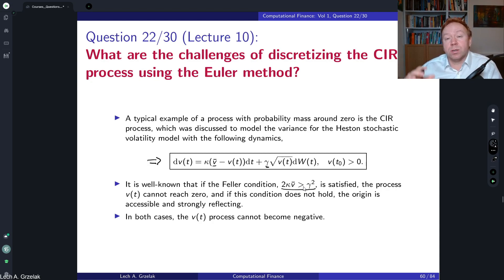So in terms of simulation, there will be some number of paths that will be going towards zero. The details about the CIR process and its applicability you can find in lecture number 10. Here we just concentrate on the Euler discretization of the CIR process.